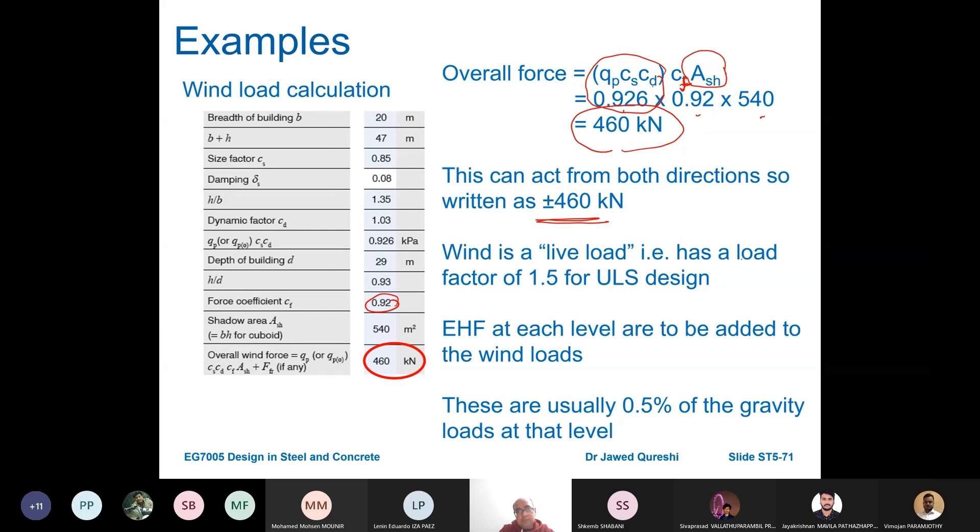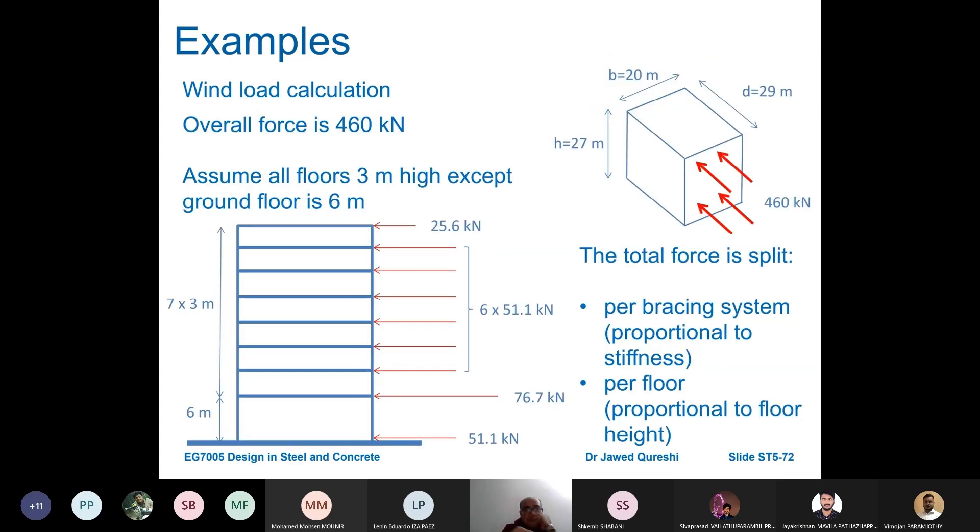Wind is a live load and has a load factor of 1.5 for ULS design, that's why we multiply it with 1.5. Equivalent horizon forces at each level are to be added to wind loads as well. These are usually 0.5% of the gravity loads or 1/200 of gravity loads. The total wind force we now know is 460.